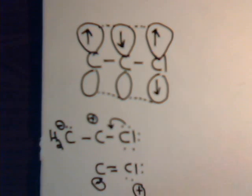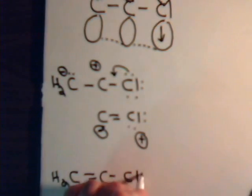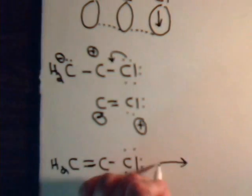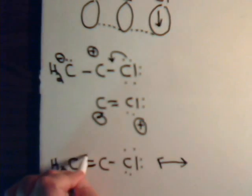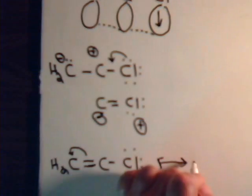So, let's go back, keeping this in mind. That's one structure, perfectly reasonable structure. Then, we said, well, we can go like this then, giving this a negative charge.